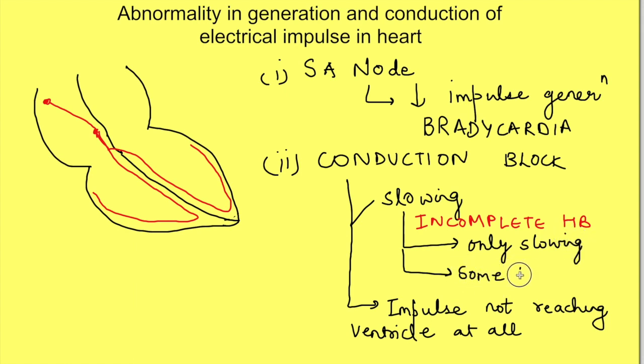The first grade causes prolonged duration of conduction only, but all the impulses are being conducted to the ventricle. Second, there may be missed beats. So like two impulses are getting transmitted to ventricles but the third one may be missed, or there may be another pattern like three impulses transmitted but every fourth impulse is missed.